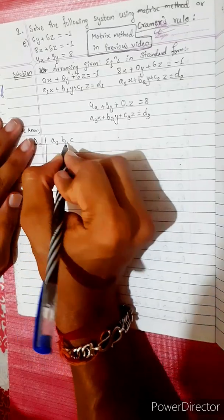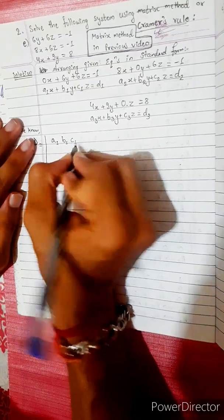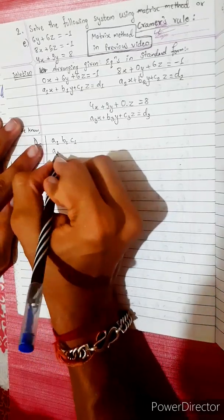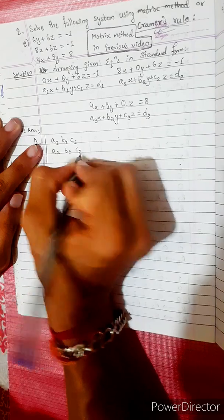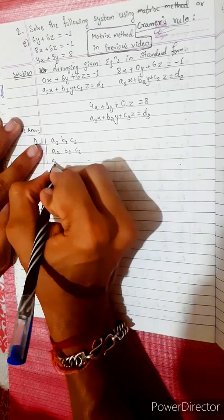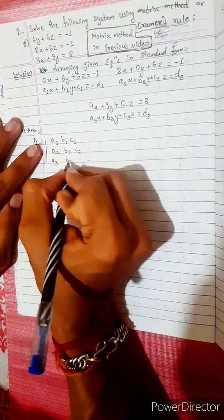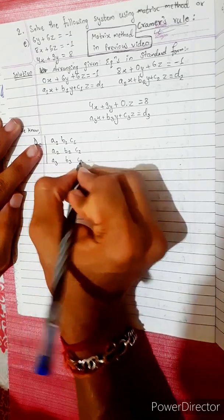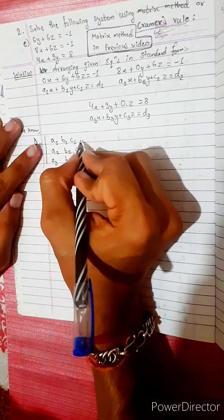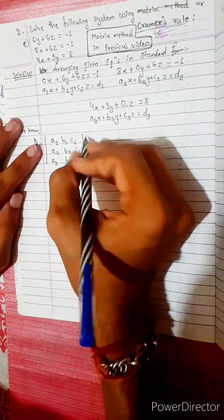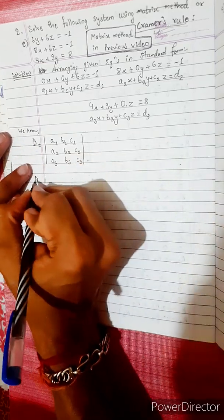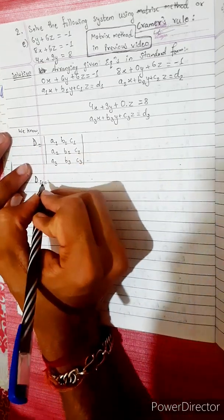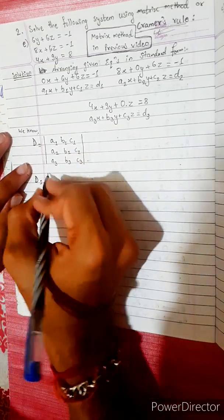D is the determinant formed by the coefficients: a1, b1, c1, a2, b2, c2, a3, b3, c3. Then D1 is the formula where we replace the first column with the constants.